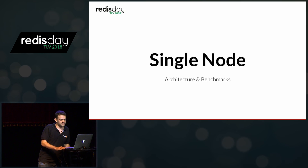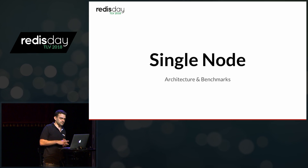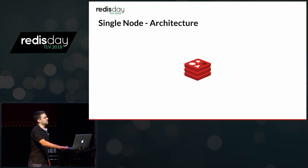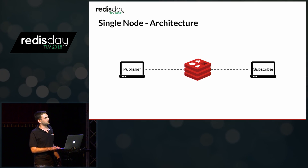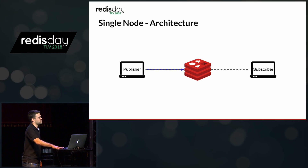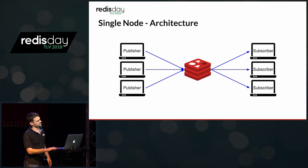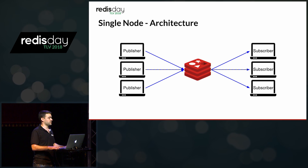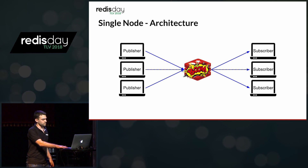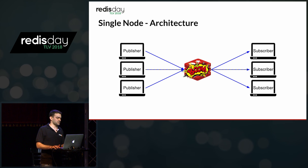So, a single node. In order to fully understand the existing issues with Redis PubSub, we need to see a step-by-step diagram of how it works. Your publisher and subscriber are both connected to Redis. The subscriber subscribes to some channels, the publisher starts sending messages to Redis, which forwards them to the subscriber. The problem is that at some point you'll have more and more publishers and subscribers all going through that same Redis node, which will eventually blow up — either maximum CPU or bandwidth. For our case, a single Redis node wasn't enough; we needed much more.